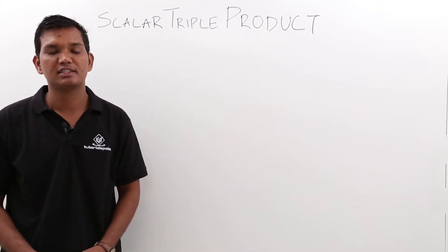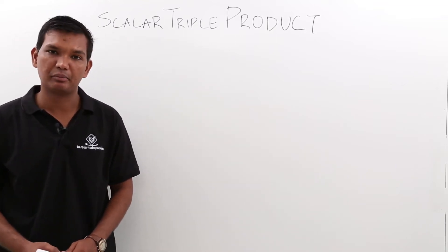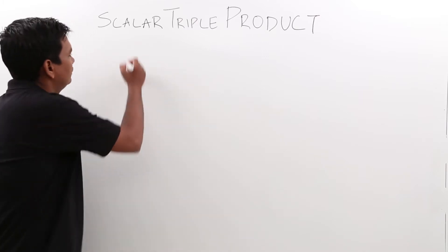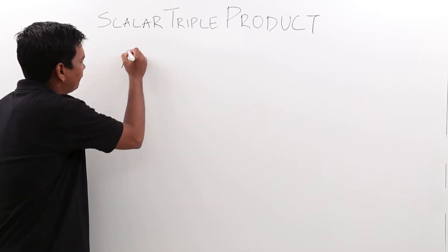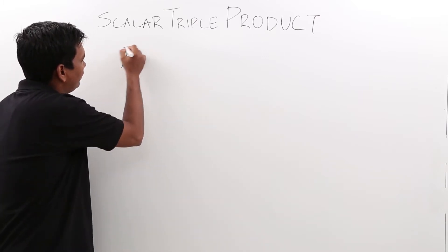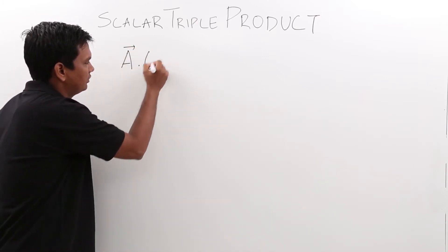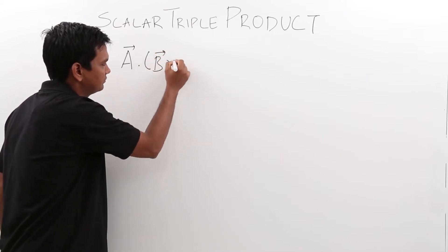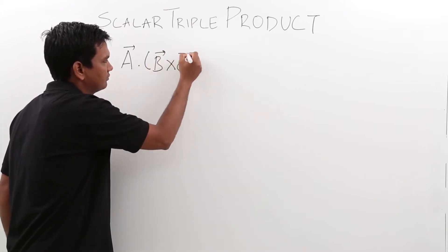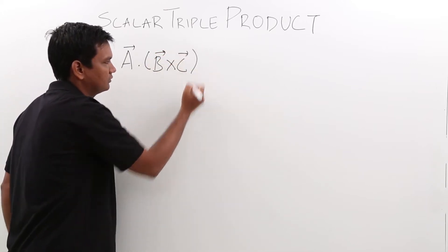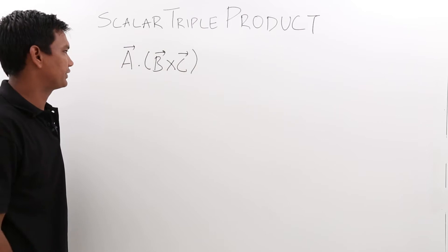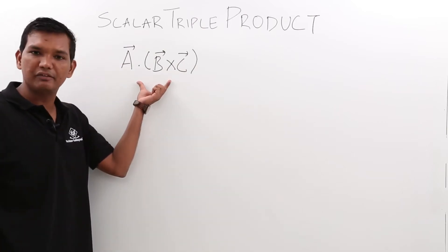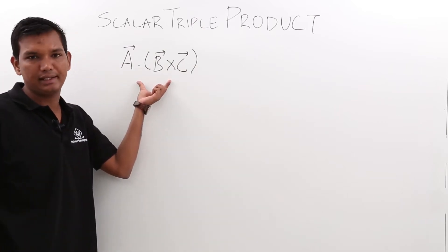In this class, we will discuss about scalar triple product. A vector dot b cross c is what is called a scalar triple product. Now, if this is given to me, how can I calculate?